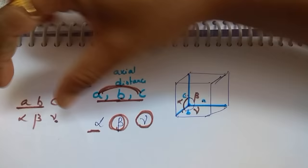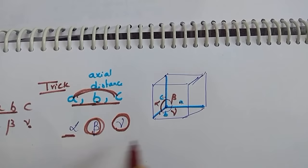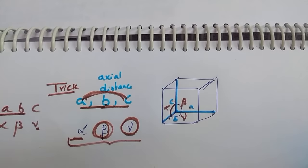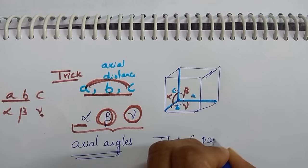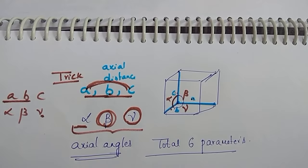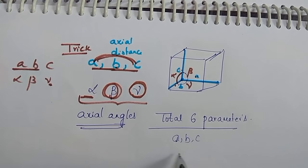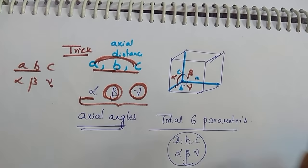In total, there are three axial distances and three axial angles. So six parameters are required to describe a particular unit cell — A, B, C and alpha, beta, gamma. Based on these values, the unit cells belong to one of seven crystal systems.